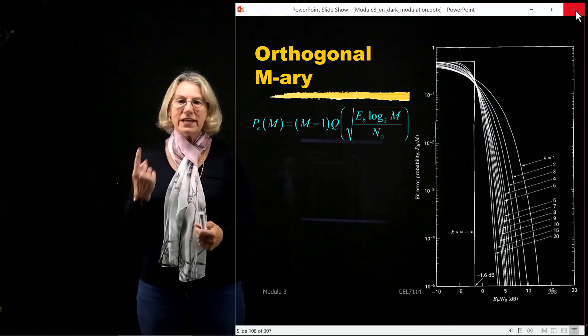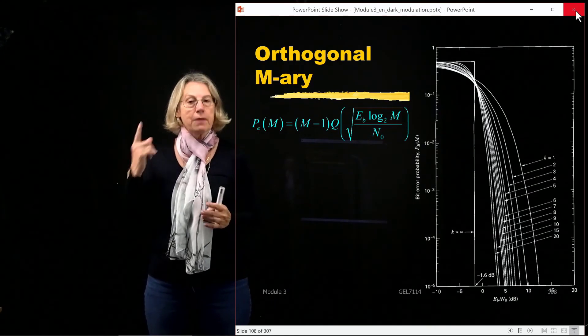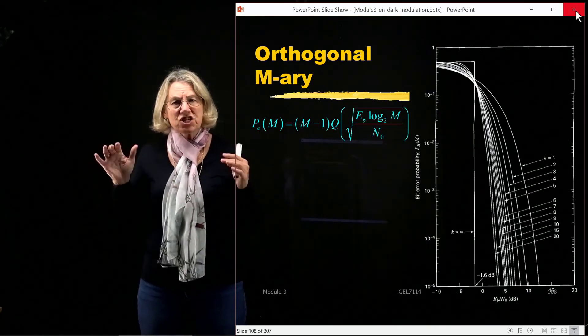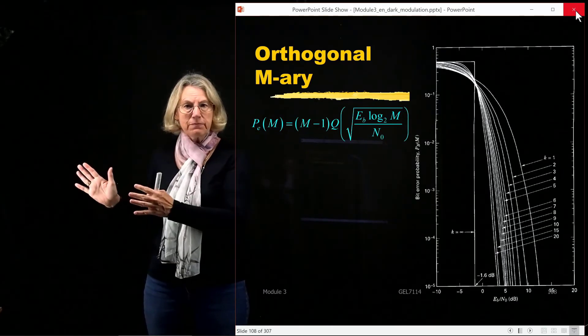and in fact, it's something special for orthogonal M-ary signaling. So FSK is one example of orthogonality. Remember, each symbol is orthogonal from the other. But any way that I achieve orthogonality,